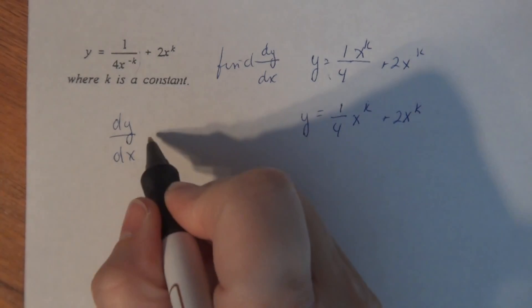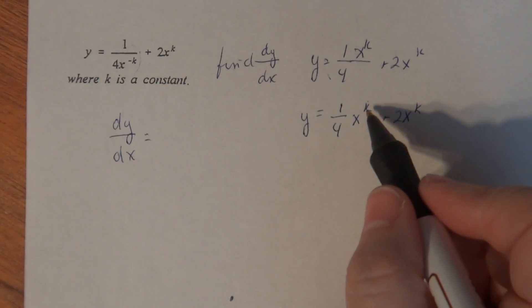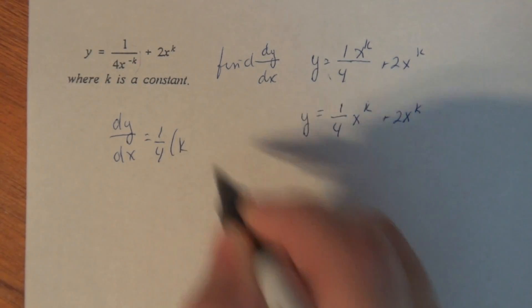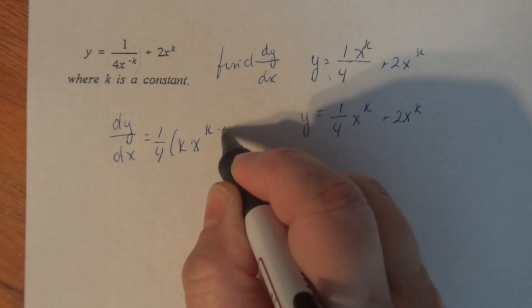Now if I'm going to take the derivative, k is a constant, so I have to treat it like a constant. That means I bring down the constant power and subtract 1 from the constant power.